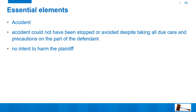Essential elements of inevitable accident: number one, there should be some accident — meaning a sudden injury. Number two, the accident could not have been stopped or avoided despite taking all due care and precautions on the part of the defendant — no matter how much care you take, you cannot stop the accident from happening. And number three, no intent to harm the plaintiff. If these three essential elements are present, the defense of inevitable accident can be invoked.